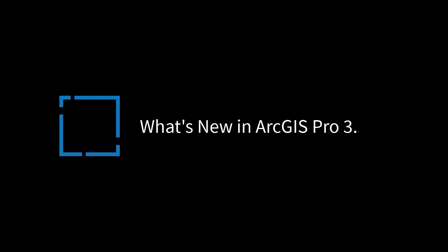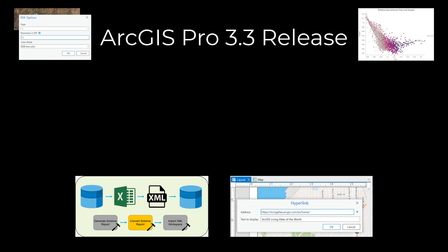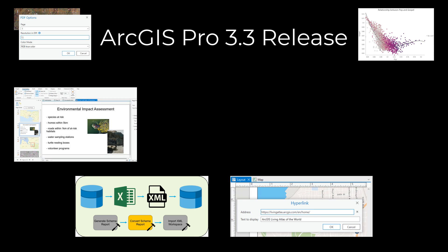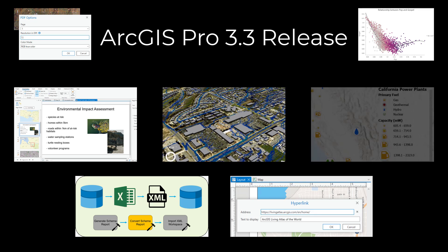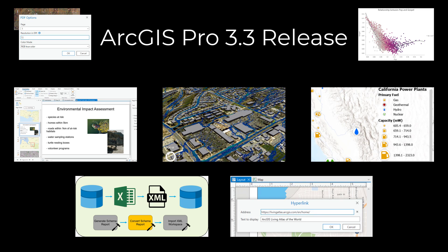Hi everyone, it's Grace from Esri. Today I will be showing you the top nine items that were added to ArcGIS Pro 3.3. In this release we added a variety of new features focusing on both innovation and ArcMap equivalency. These include presentations, flood simulation, symbolizing unique value classes by attributes, and many more.